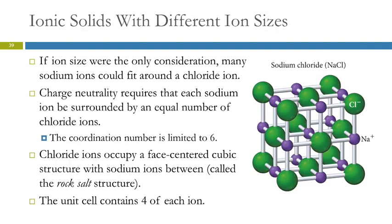If we look at the chloride ions, we have a face-centered cubic structure with the sodium ions falling in between them. This is called a rock salt structure. Each unit cell is going to have four of each ion. When we looked at face-centered cubic, we had four atoms or four particles in there — here, those particles are the chloride ions — and we have an equal number of sodium ions stuck in between.